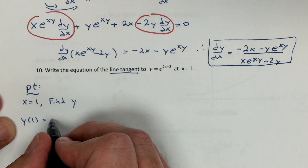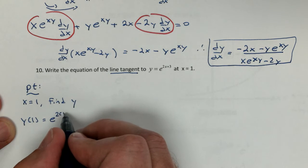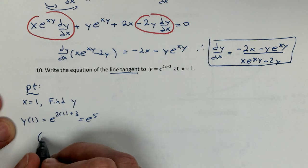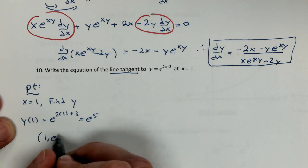If I plug in 1, I get e to the 2 times 1 plus 3. So I'm just going to get e to the 5th. So my point, 1 e to the 5th.